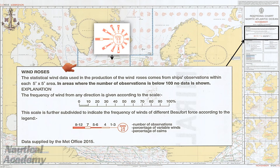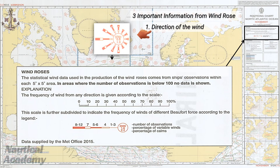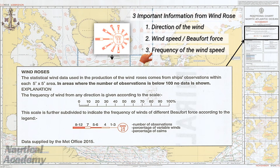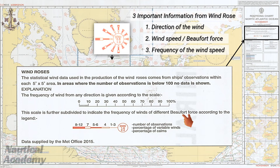The wind rose gives us three important pieces of information. First, the direction of the wind — showing where the wind is coming from. Second, the speed of the wind, represented by the Beaufort scale. Third, the frequency of each wind speed — how often winds of a certain strength occur from that direction. On this chart, one scale represents the frequency of the wind, while another scale represents the Beaufort force, readable through each orange arm, or spoke.